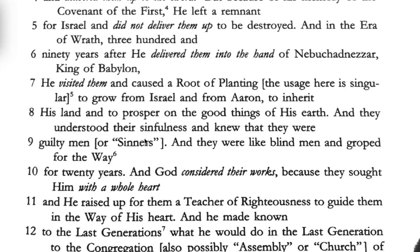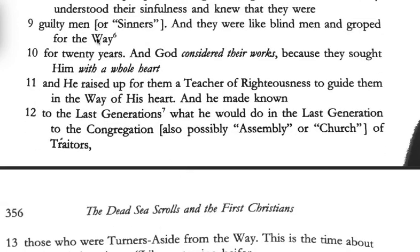'To grow from Israel and from Aaron to inherit his land and to prosper on the good things of his earth. And they understood their sinfulness and knew that they were guilty men, and they were like blind men and grew up for the way.' 'The Way' was one of the names of the early assembly — followers of the Way. 'They grew up for the way for 20 years.' This is a works-based document, much like what you see with James and Peter, as opposed to Paul, who taught that faith alone saves you.